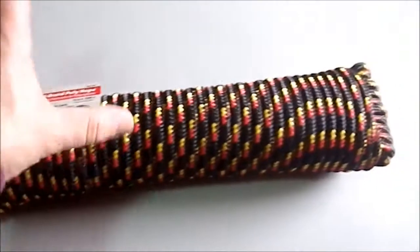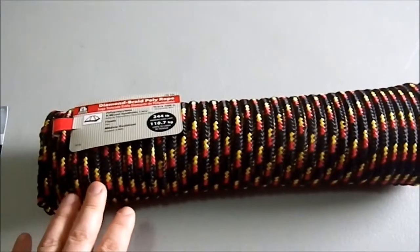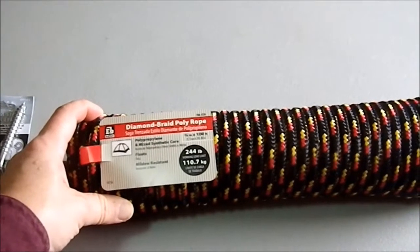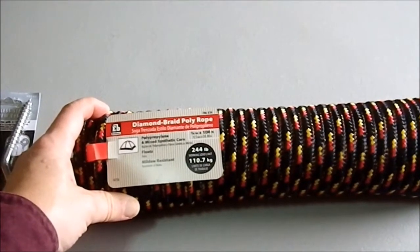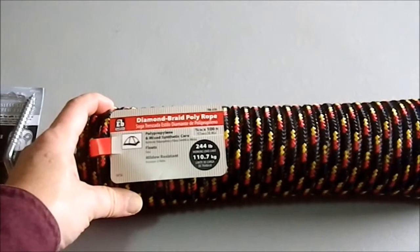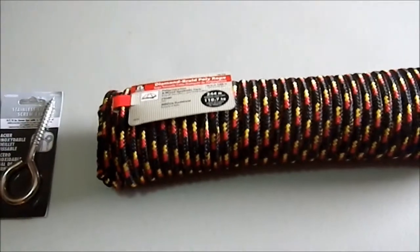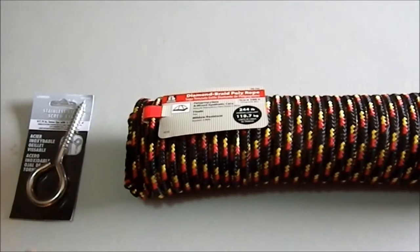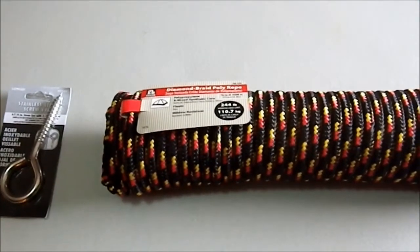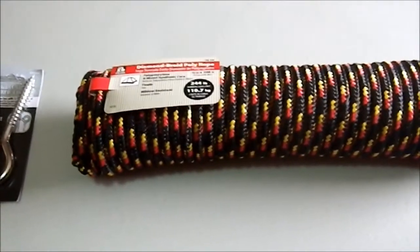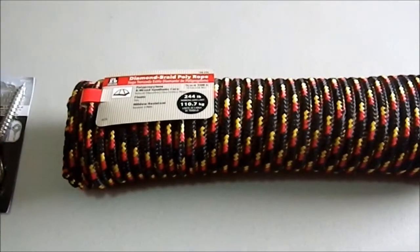And then I have some 3 1/8 inch diamond braid poly rope. This is 100 feet of it. It's tested to 244 pounds, 110.7 kilograms. And this is far more than I need. I'm only going to need about 18 feet of it. But for $10, I picked up 100 feet. So I've got enough for this project and many other projects in the future. I also kind of like the color.